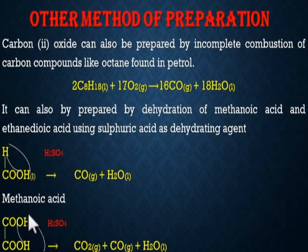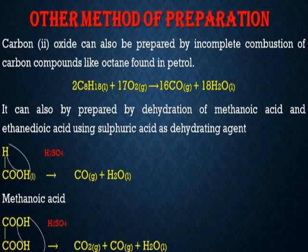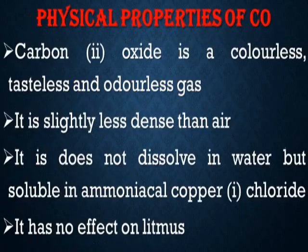Continuing with the dehydration of ethanedioic acid: if you remove the OH here, what is left is CO gas. And then the other part — if you remove the H — what is left is CO₂, which is carbon dioxide gas. So that is another method of preparing carbon monoxide in the laboratory.